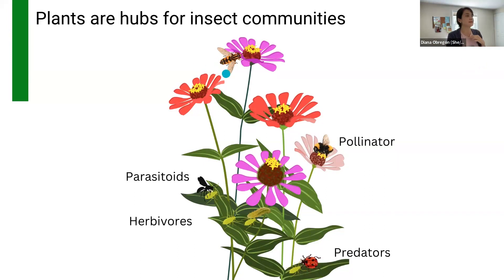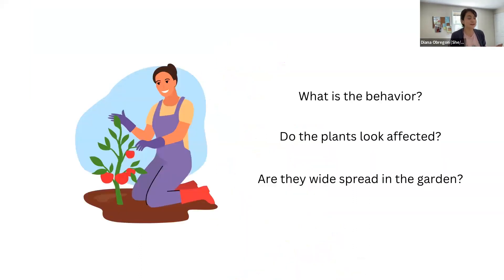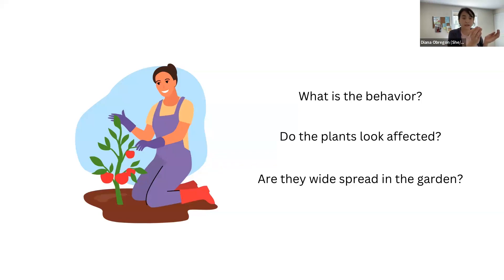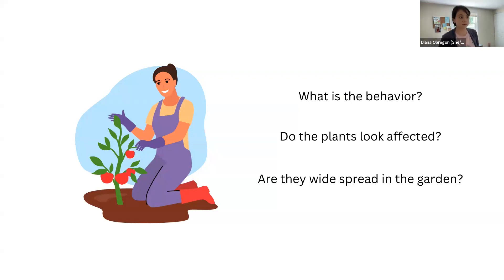For example, the hoverfly — as an adult it can be a pollinator, but as larvae it likes to eat aphids. So this is like the ideal insect to have in your garden; if you see a hoverfly, protect them. My goal for this presentation is just to tell you: observe, observe, and observe. Pay attention to the insects in your garden, their behaviors, how the plants look, whether they're affected or not, and how spread the insects are — because many insects like to live gregariously. If you find them in one spot, it's easier to control them instead of waiting for them to spread all over your garden. Monitoring and constantly checking your plants will help you a lot.